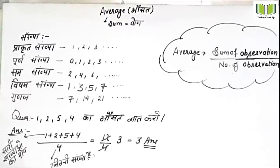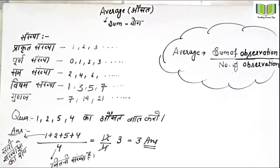We have average. Average is the sum of all observations divided by the number of observations. So if we have 1, 2, 3, the sum of all divided by the number of observations gives us the average.